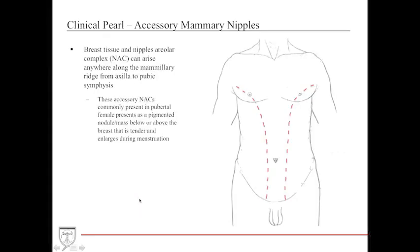An important clinical pearl: the mammary ridge extends from the axilla down to the pubic symphysis. In certain humans — particularly pubertal females — accessory nipples and nipple areolar complexes can present anywhere along this ridge as a pigmented nodule that may be mistaken for a mole. During the menstrual cycle, these can become inflamed, enlarged, or tender. While usually benign, they can be surgically removed.